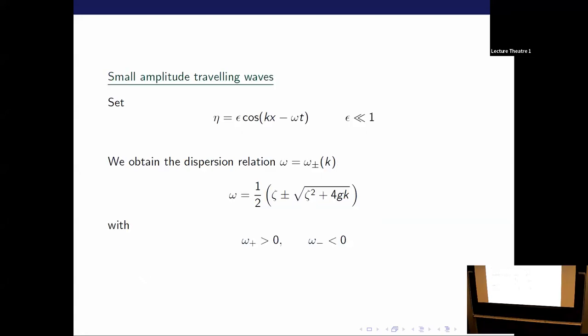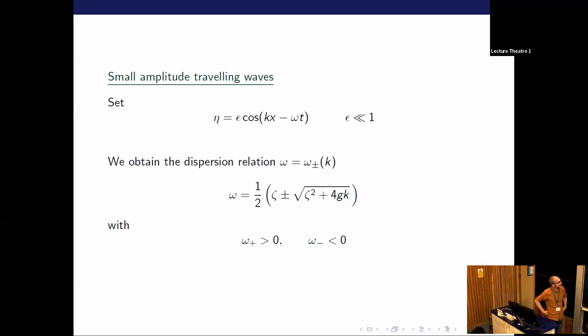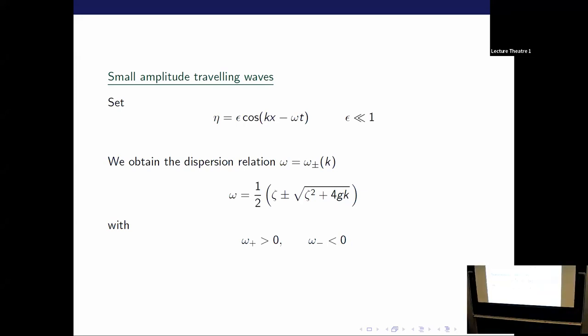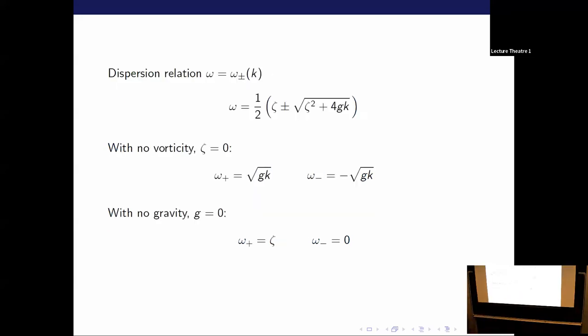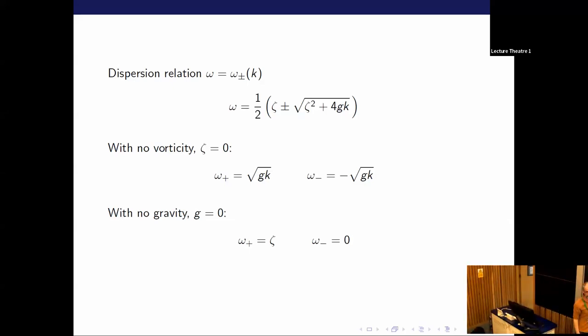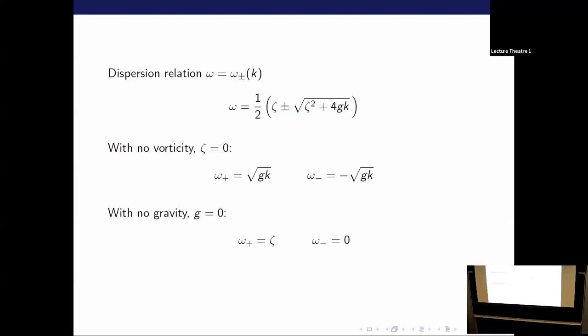If you look for small amplitude traveling waves, then to get a dispersion relation out of this in the normal way, we introduce eta, eta is the free surface shape. Introduce a small amplitude perturbation, wave number k, frequency omega, then you get to this dispersion relation here. So again, zeta is the constant vorticity field. Here's the dispersion relation with gravity that everybody knows about, plus or minus square root of gk in deep water. If you knock out gravity, then that dispersion relation reduces to this form, and it doesn't have k in it, so it doesn't depend on the wave number. So there are two frequencies, zeta the constant vorticity field, and zero. And they're independent of k.